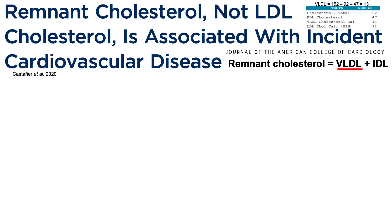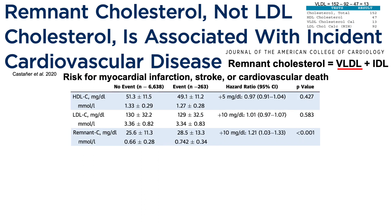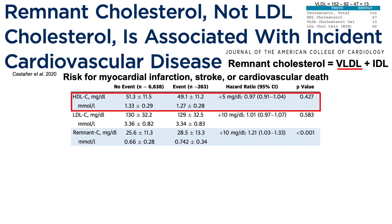In one study of about 6,900 subjects, remnant cholesterol — but not LDL cholesterol — was associated with the incidence of cardiovascular disease, defined as risk for heart attack, stroke, or cardiovascular death. HDL was not associated with these adverse outcomes: HDL levels were not significantly different between people who did and didn't have a cardiovascular event, and higher levels of HDL were not associated with a higher hazard ratio. Similarly, LDL was not different between the two groups, and higher LDL was not significantly associated with higher risk for any of these outcomes.